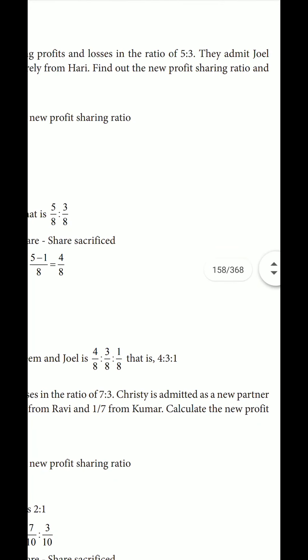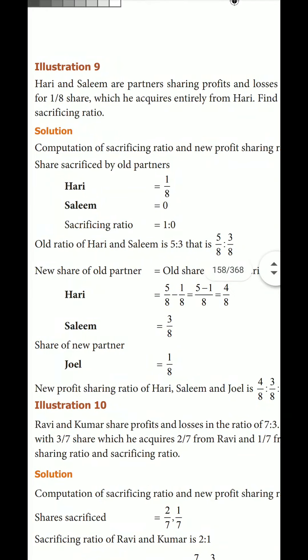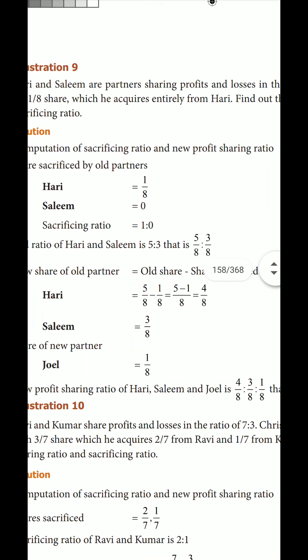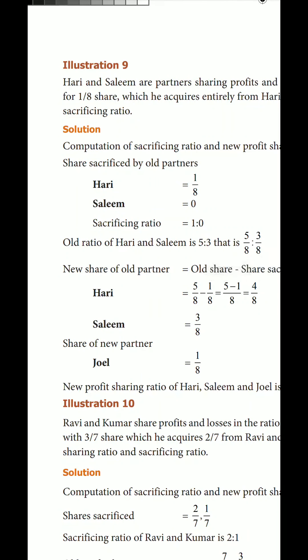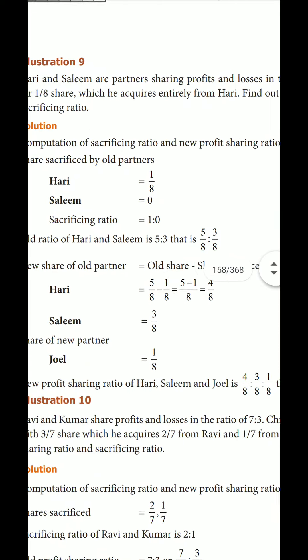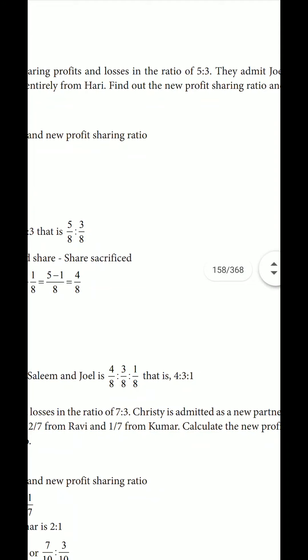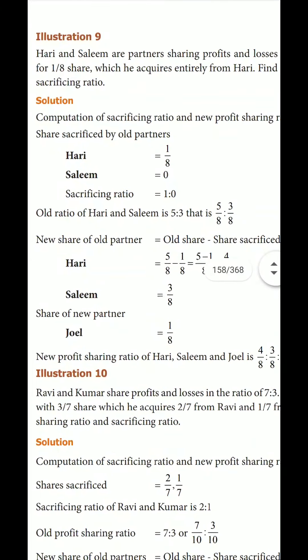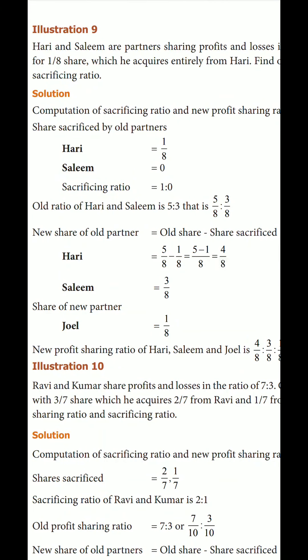Hari and Salim share in the ratio 5:3. Now Joel is the new partner admitted for 1/8 share. How many people received the new profit sharing ratio? We need to find the new profit sharing ratio for Hari, Salim, and Joel. Let's note the computation to finalize the new profit sharing ratio.